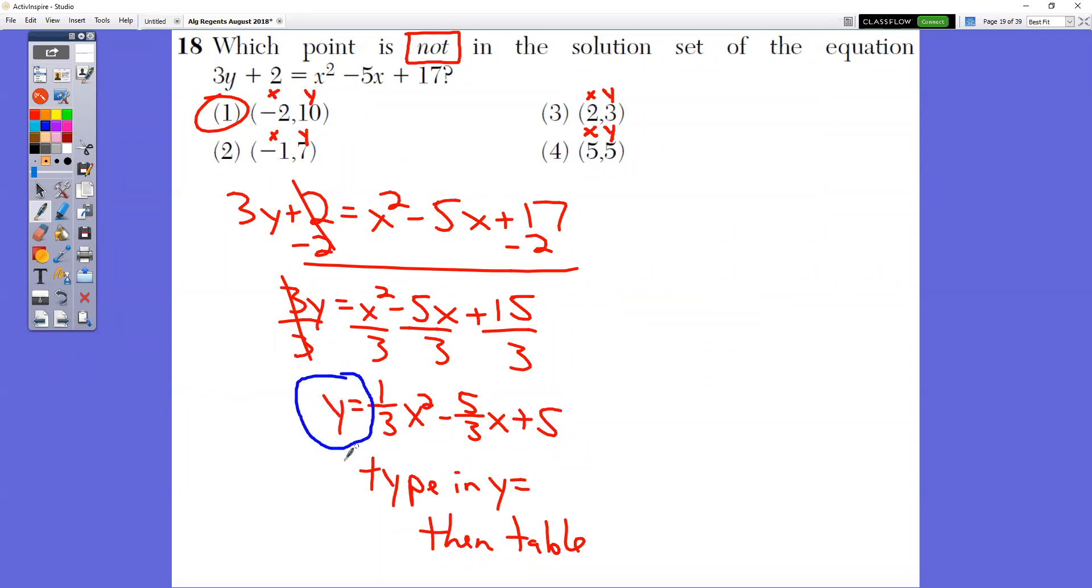Then you can type it into your y equals and hit second and table. These are your x values. Remember all points are written x comma y. So when you do second and table, this is the only point that is not in that table. All three of these other points would show up in the table.